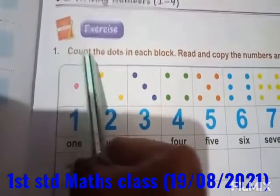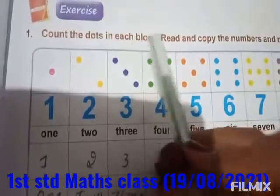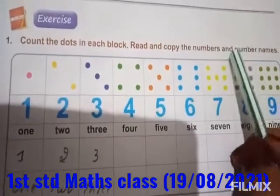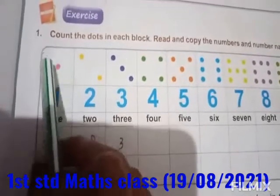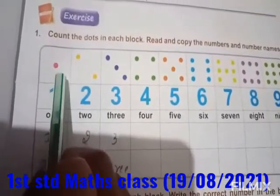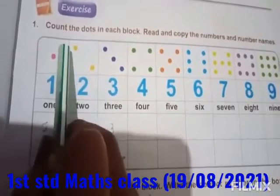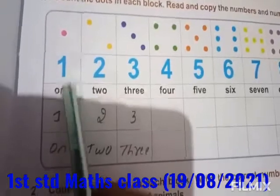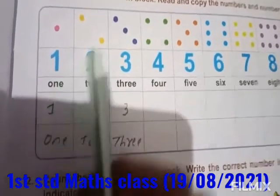Exercise 1: Count the dots in each block. Read and copy the number and number's name. You have to count the dots which have been given in the box. In this box, how many dots are there? Only 1. Number's name: ONE.